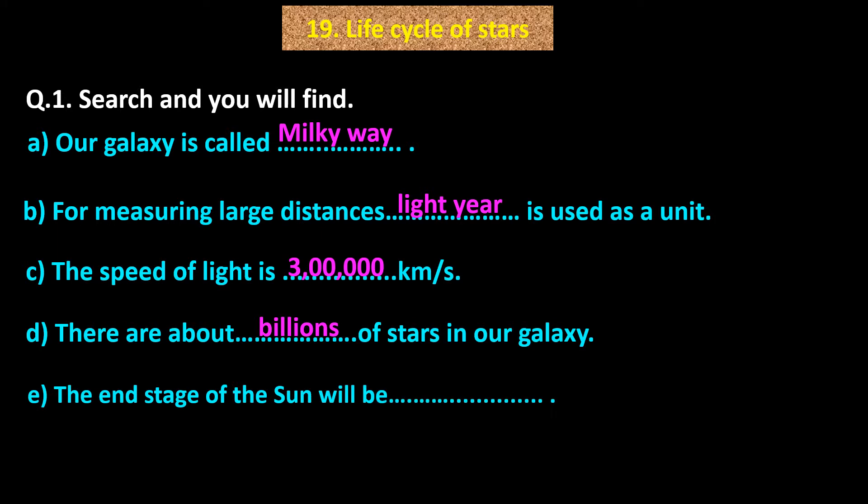E. The end stage of the sun will be dash dash dash. Answer: White dwarf. E. The end stage of the sun will be white dwarf.